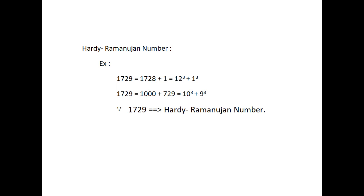For example, consider the number 1729 which is equal to 1728 plus 1 which is equal to 12 cube plus 1 cube.